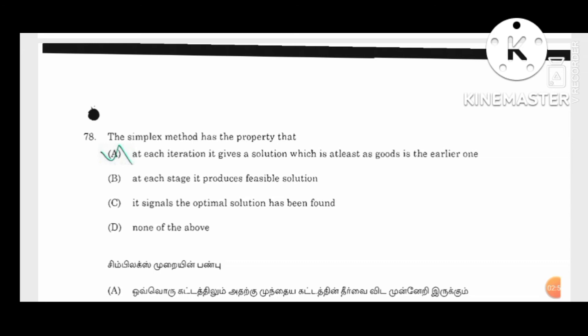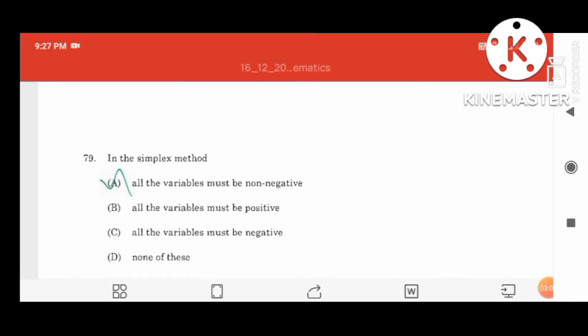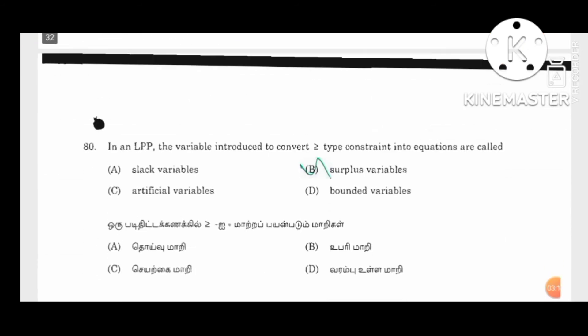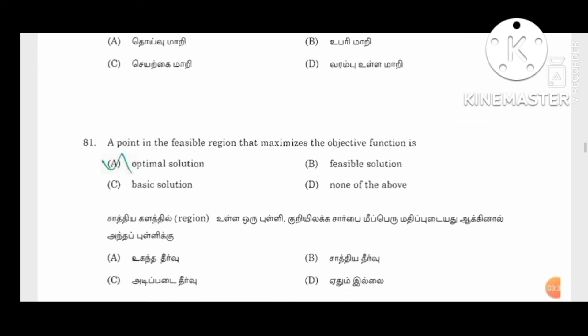The simplex method has the property that at each iteration, it gives a solution which is at least as good as the earlier one. After the simplex method, all variables must be non-negative.